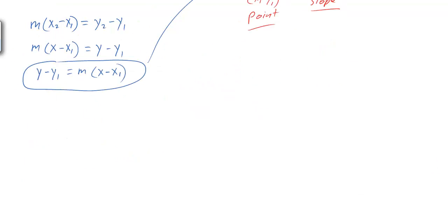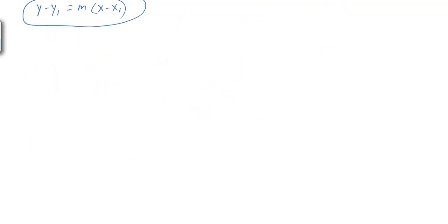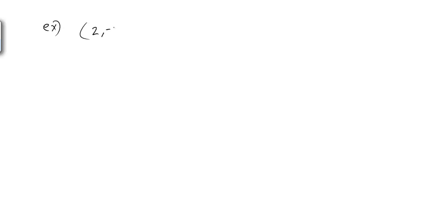For an example, let's say we are given the point (2, -3) and we know this is a point on our line, and we know that the slope is 2/3. How can we find the equation of the line that contains this point and this slope?